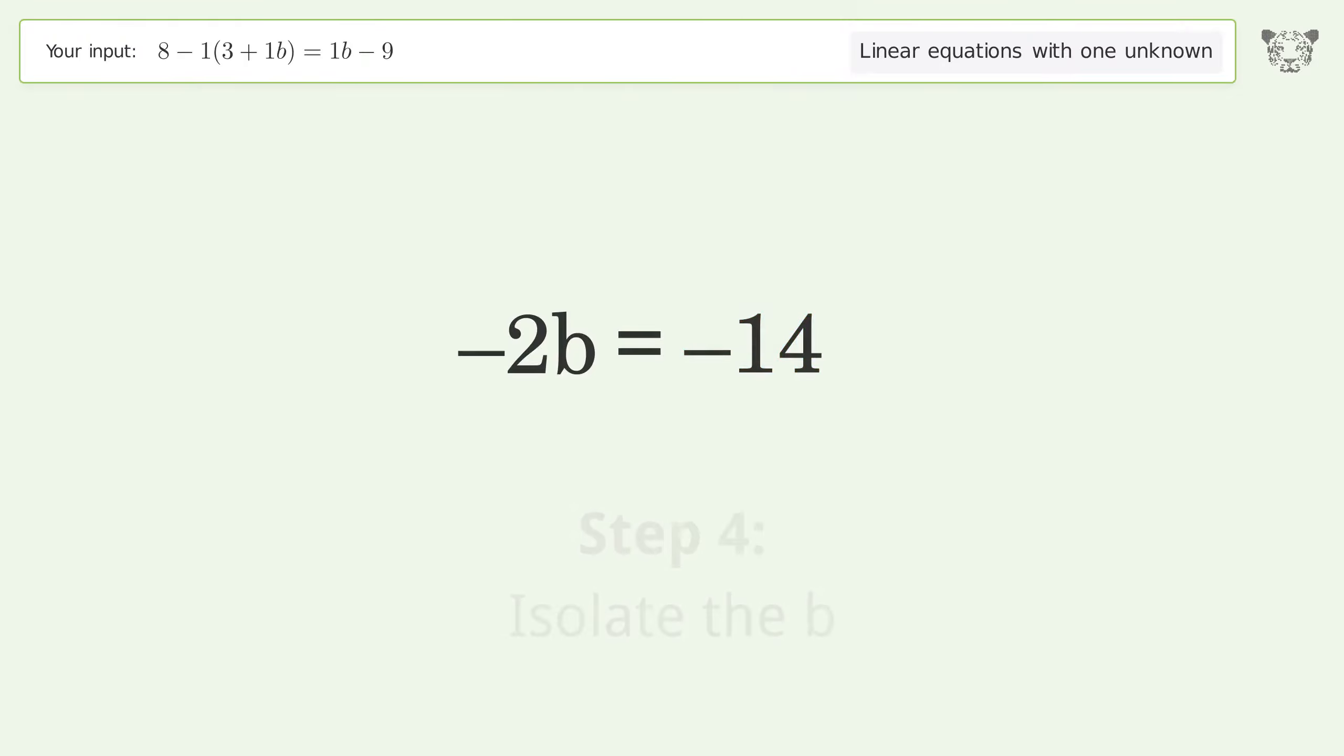Isolate the b by dividing both sides by negative 2. Cancel out the negatives.